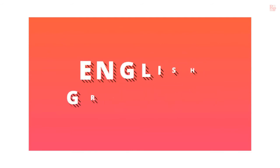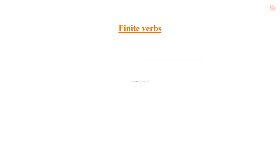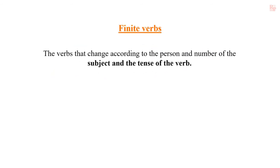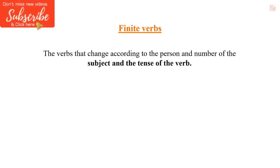In this video we are going to know about the differences between finite verbs and non-finite verbs. The verbs that change according to the person and number of the subject and the tense of the verb is called a finite verb. For example: